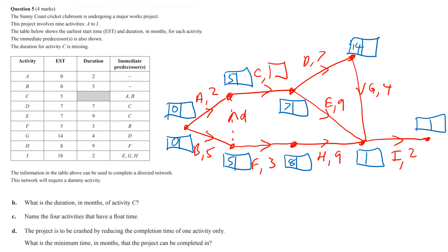The EST of G is 14, and the starting point for I is 18. Then 18 plus 2 gives you 20. So what is the duration in months of activity C? Looking at the diagram, C goes from 5 to 7, so activity C must have a value of 2 — the only way to get from 5 to 7 is by adding 2.